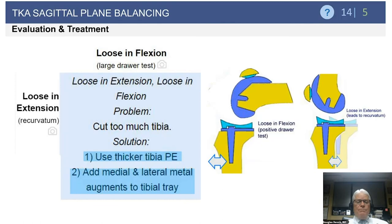In general, a principle in revision surgery is that with every revision, you should always be thinking of the next revision. I use that mentality if I get up to excessively thick tibial polyethylene bearing thicknesses. If I'm dealing with a patient who may be 80 years of age or more with a limited life expectancy, just due to cost, I would simply use the thicker tibial polyethylene insert.